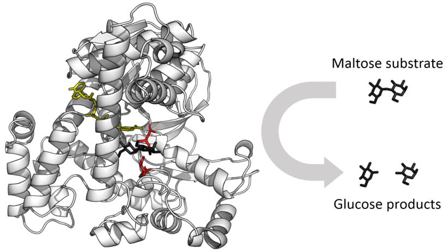An enzyme's name is often derived from its substrate or the chemical reaction it catalyzes, with the word ending in -ase. Examples are lactase, alcohol dehydrogenase and DNA polymerase. Different enzymes that catalyze the same chemical reaction are called isozymes. The International Union of Biochemistry and Molecular Biology have developed a nomenclature for enzymes, the EC numbers. Each enzyme is described by a sequence of four numbers preceded by 'EC', which stands for Enzyme Commission.